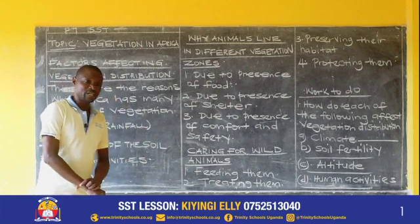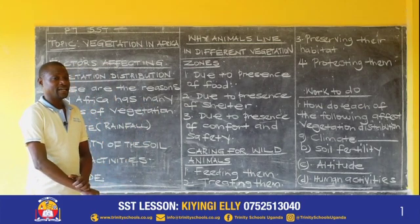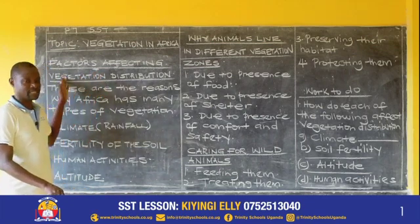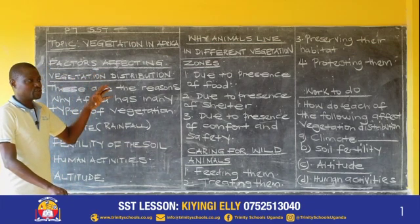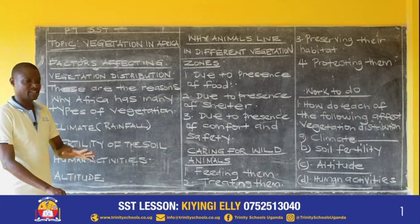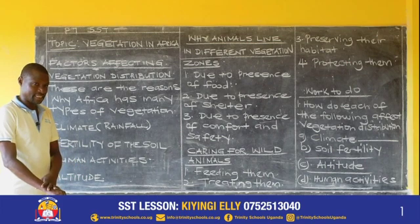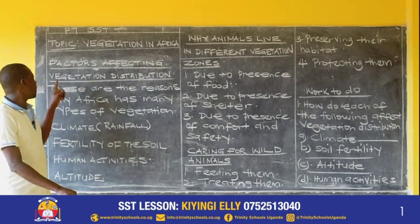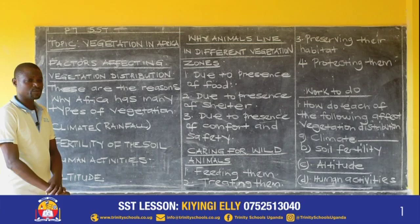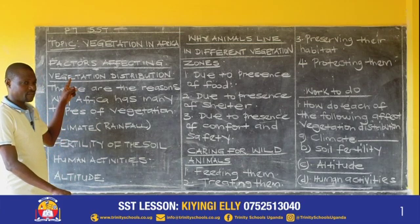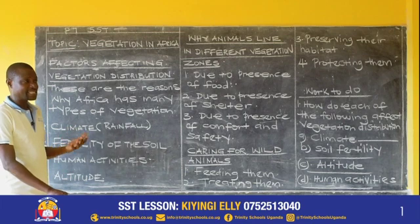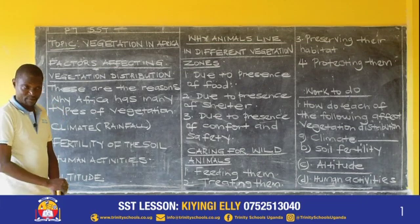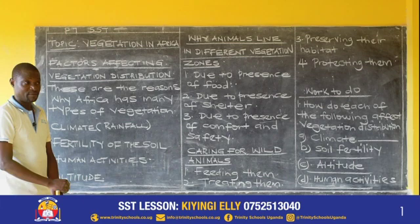I remember before we broke off due to coronavirus, I was teaching vegetation in both streams. And I'm sure in both streams we had not yet reached this. I had introduced in P7 West — we are almost finishing vegetation zones. But in P7 East, we had just started. So the topic is vegetation in Africa, and we are discussing the factors affecting vegetation distribution. We are discussing why Africa has very many types of vegetation. Why don't we have only one type of vegetation, yet it is one continent?